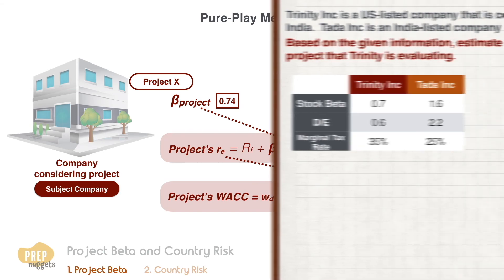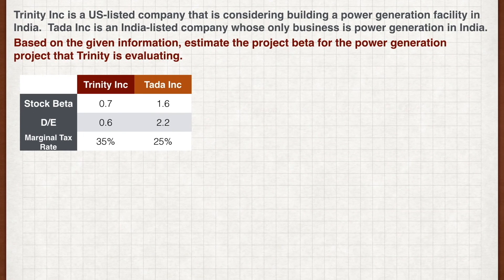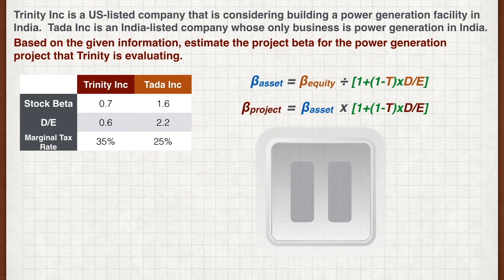Let's work on an example. Trinity Incorporated is a US-listed company considering building a power generation facility in India. Tadar Incorporated is an India-listed company whose only business is power generation in India. Based on the given information, estimate the project beta for the power generation project that Trinity is evaluating. Pause the video now and work out your answer.